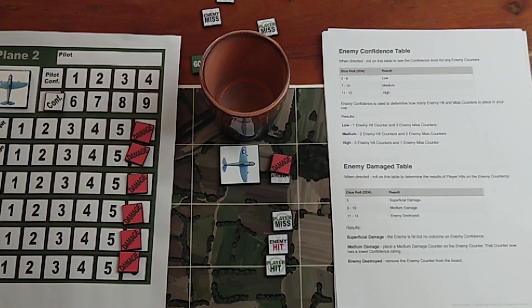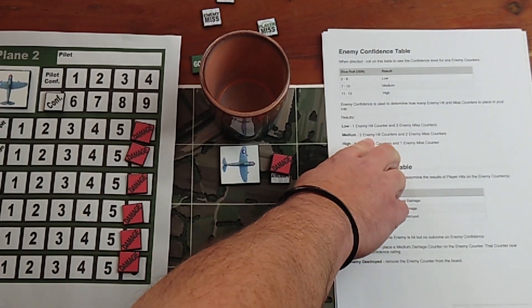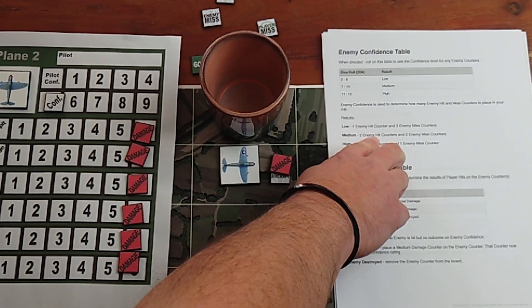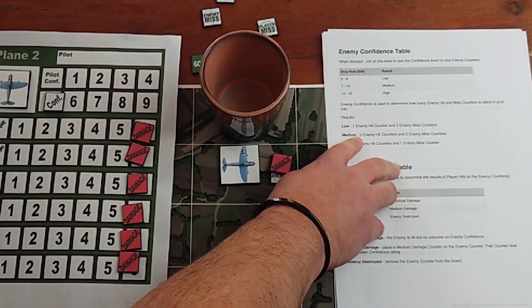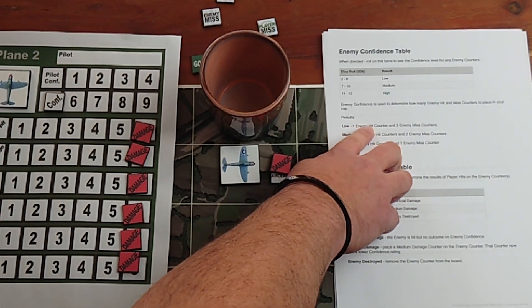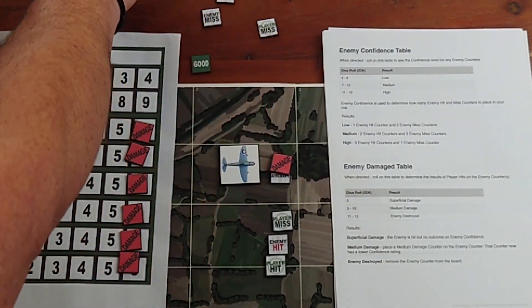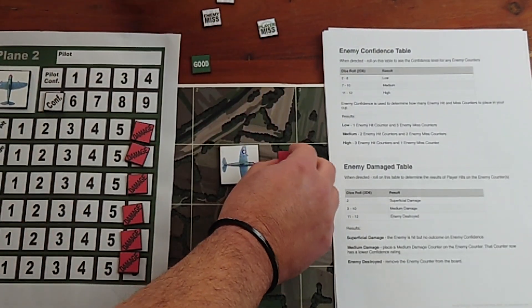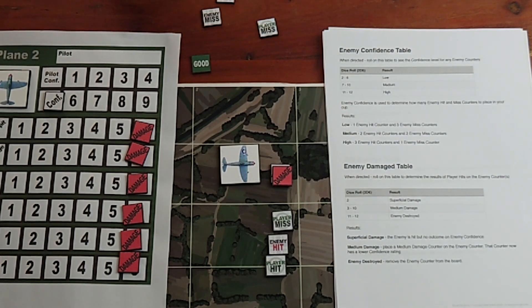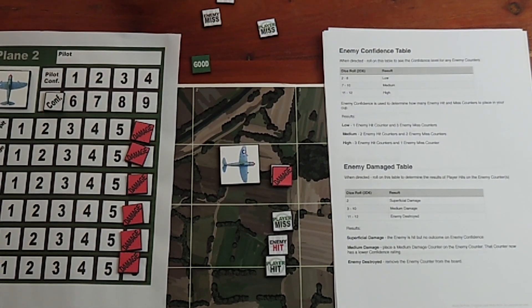For example, that enemy was medium, so he was placing two enemy hit counters and two enemy miss counters. If it's low, it's just one enemy hit counter and three enemy miss counters. Plus, when an enemy is damaged, if I cause another damage, it is removed from the game and then the plane can progress.